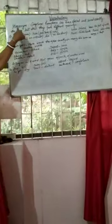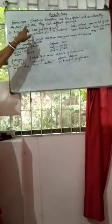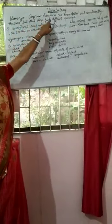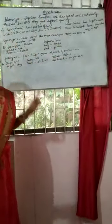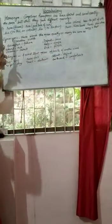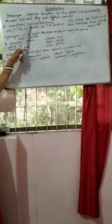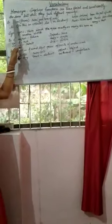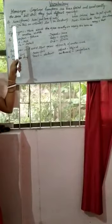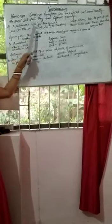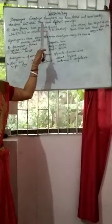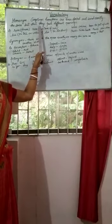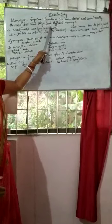Now, homonyms: sometimes these words are even spelled and sound exactly the same, but still have different meanings. For example, rose — R-O-S-E — is a flower. And rose — R-O-S-E — is also the past tense of 'rise', as in 'I rose at 7 o'clock.'